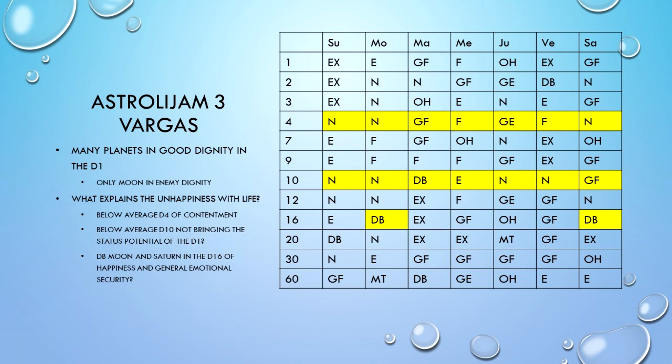We've also got a pretty average D10. This is our chart of status, of recognition, of how we're seen in the world, how we stand out, what we're known for. And you can see the person may feel that their life should be spectacular, amazing with all of those good places of dignity. And yet the fruit of that in status and in work and in recognition is quite average: neutral, neutral, neutral, neutral.